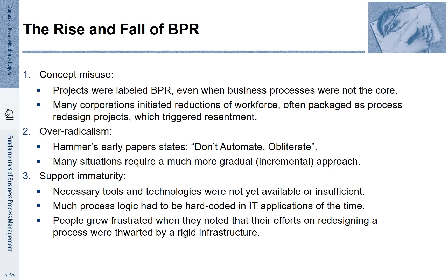The case of Ford and other cases reported by Hammer and Champy made business process re-engineering very popular. However, a larger share of BPR projects failed. Why was that the case? First, because the concept was misused — companies would set up projects labeling them BPR but were only interested in cost savings, not in redesigning the processes. Second, many projects were too radical. Hammer states in one of his papers: "Don't automate, obliterate." For many processes, this was too drastic. Third, the support was often immature — the necessary tools and technologies were not yet in place to support entire business processes, and people often got frustrated because the right infrastructure was not available.